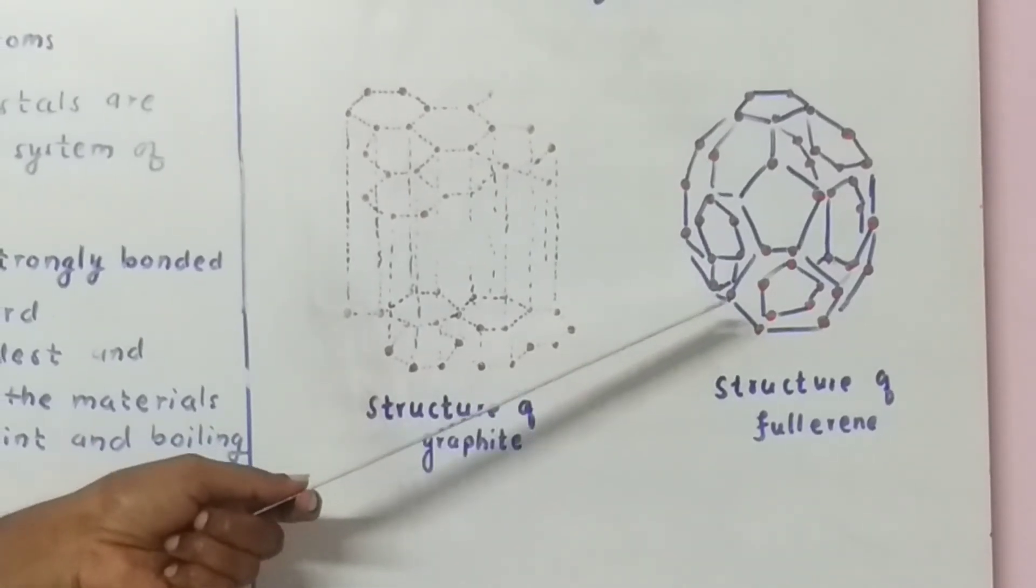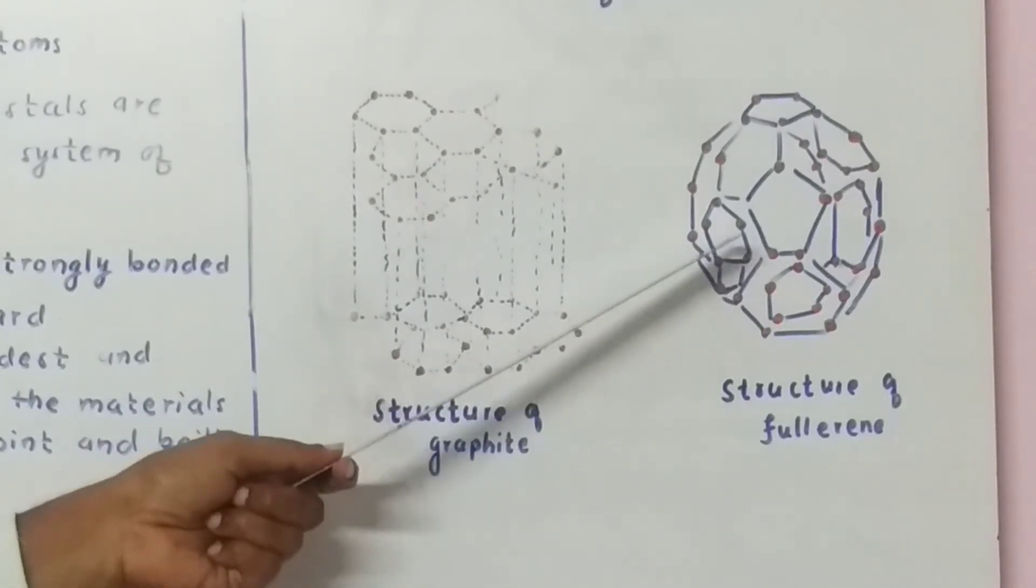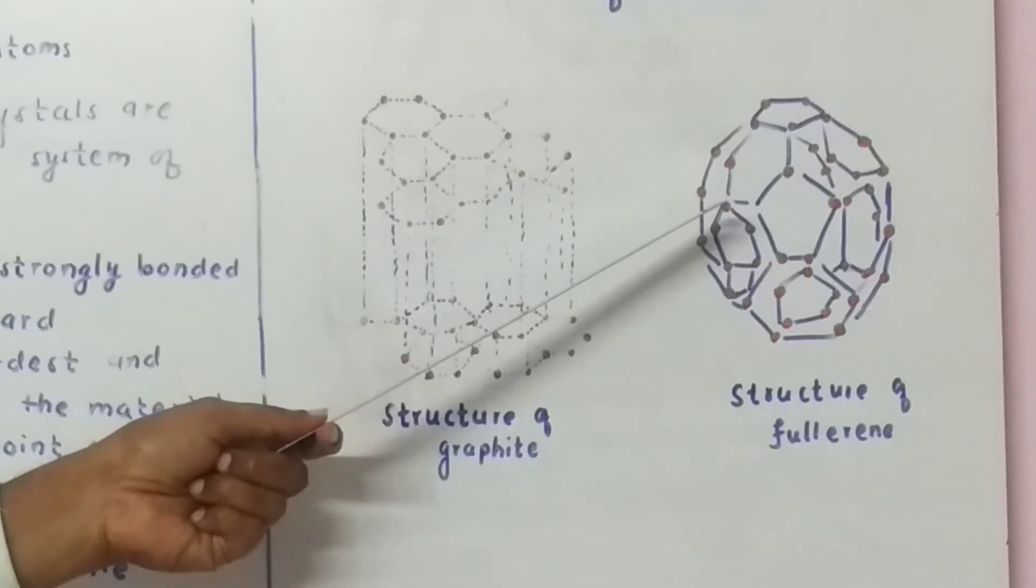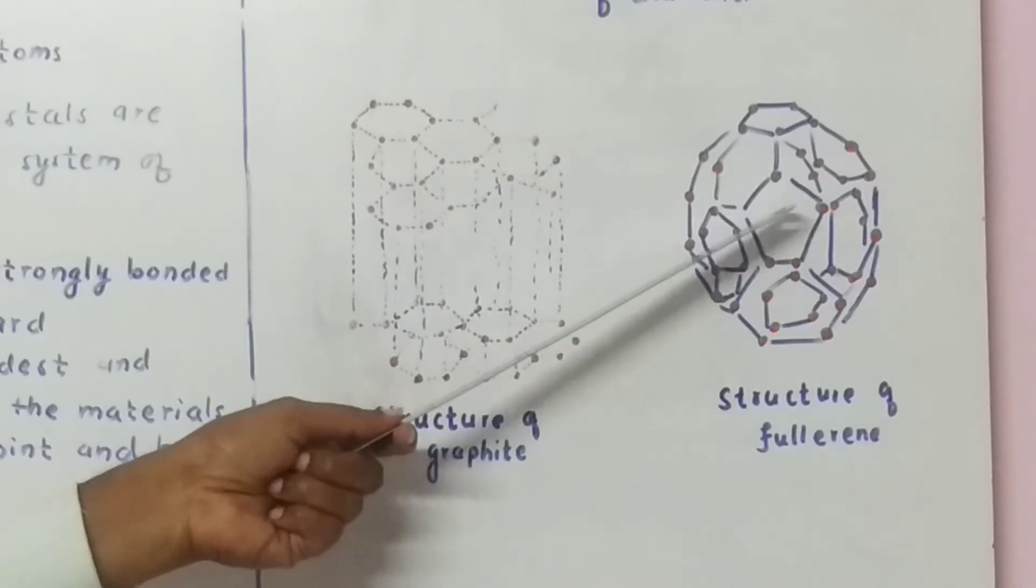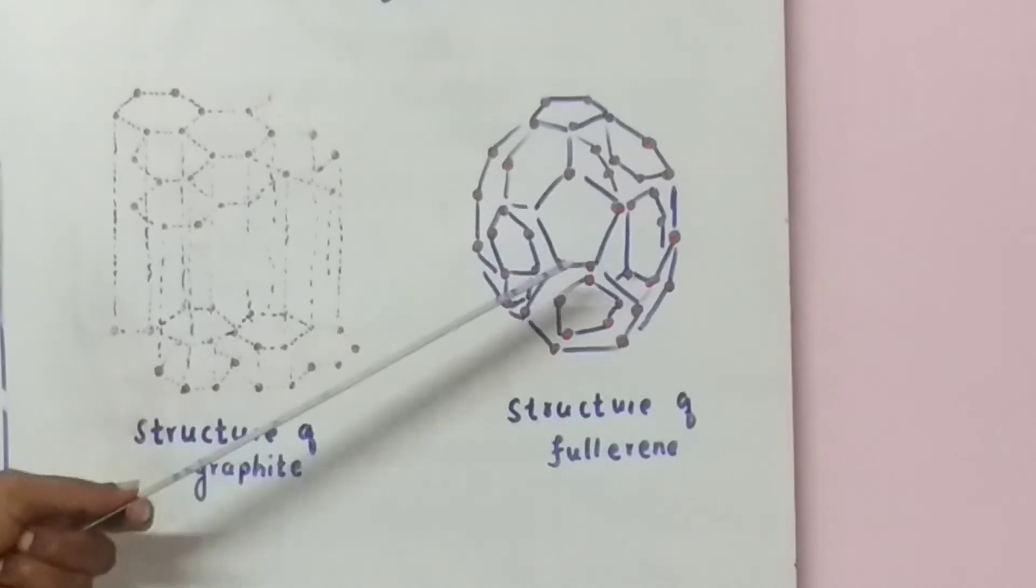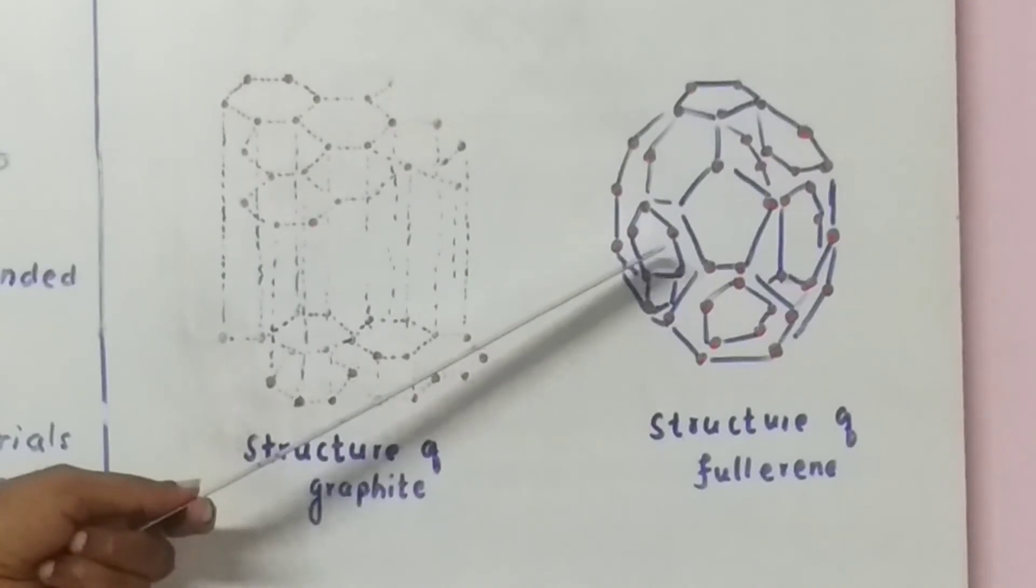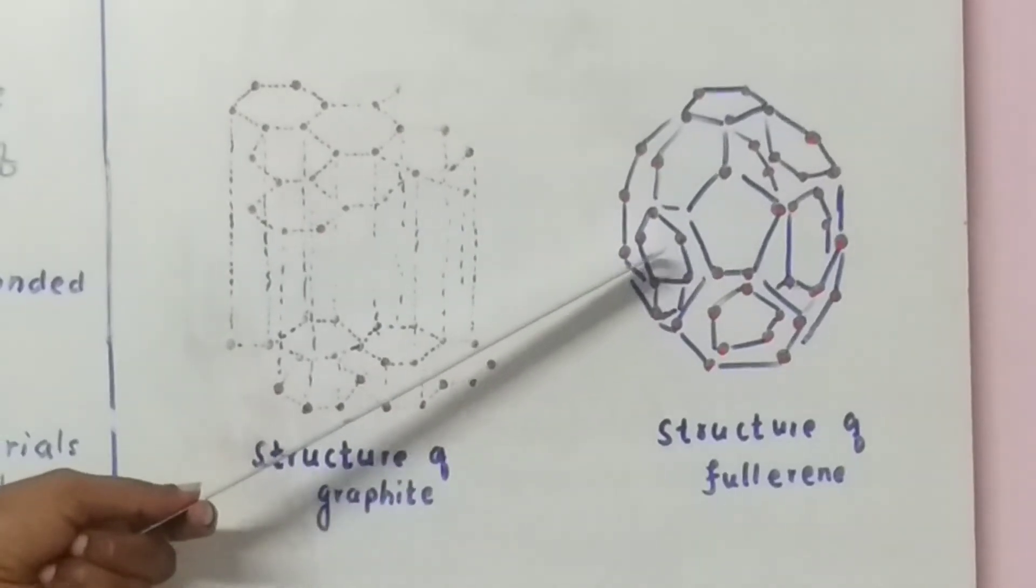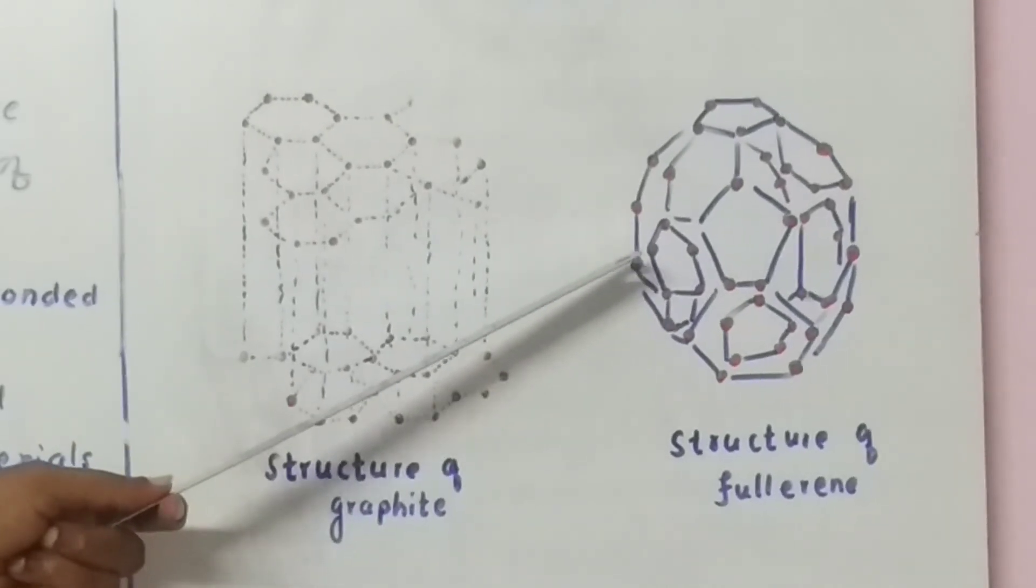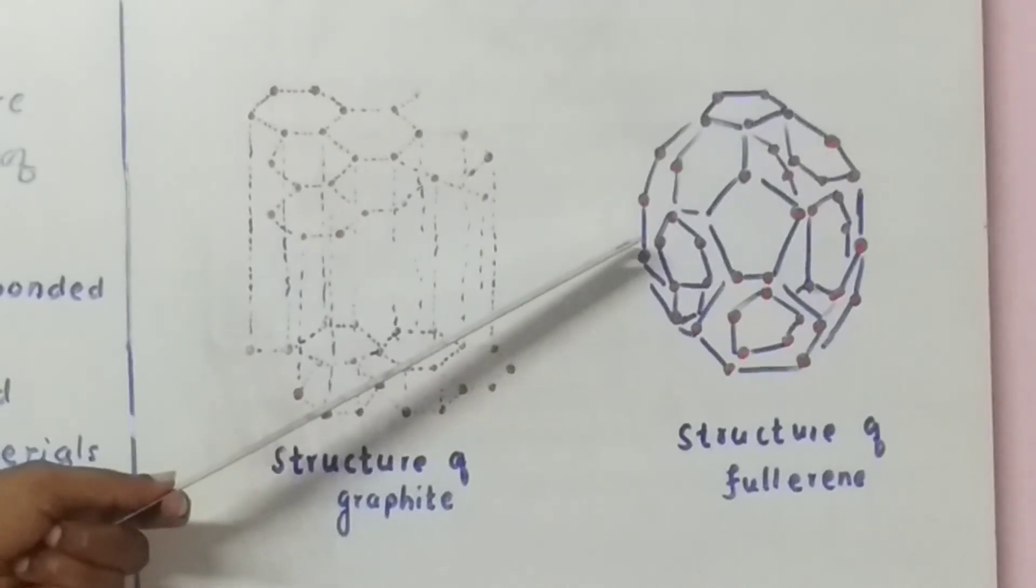An important fullerene is carbon sixty (C60). In which each carbon atom is sp2 hybridized, which is linked to one another to give a hexagonal and pentagonal ring. There are 12 pentagonal and 20 hexagonal rings which are fused to one another to give a structure like soccer ball or a hollow sphere.